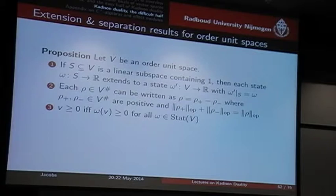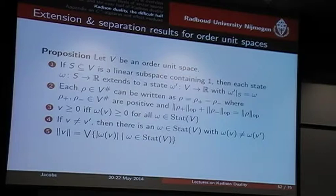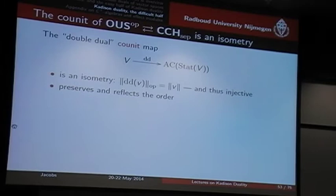An element is positive if and only if it's positive when applied to a state. Again, this is a very important property. If two elements are different, then they can be distinguished by a state — an important separation property. And finally, the norm can be expressed as the join of all these absolute values that you get by applying states.